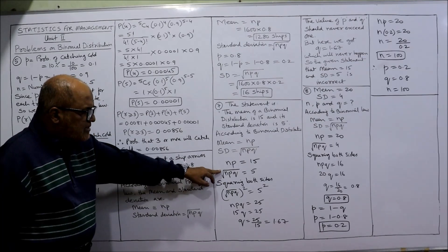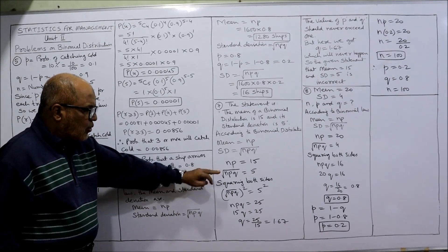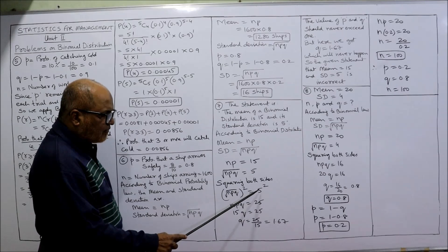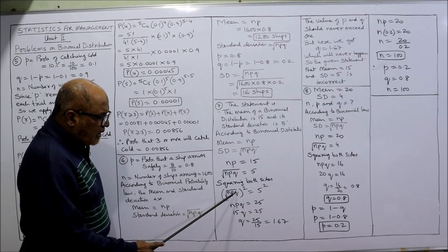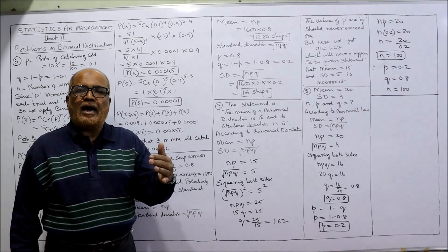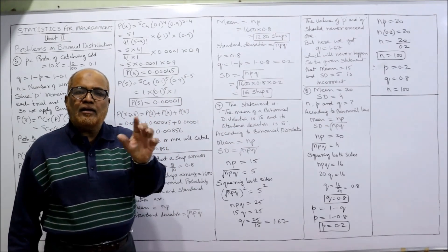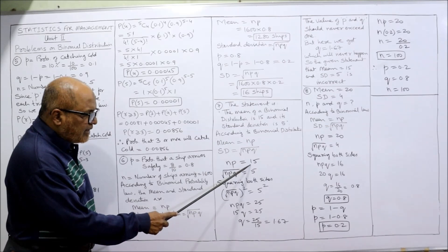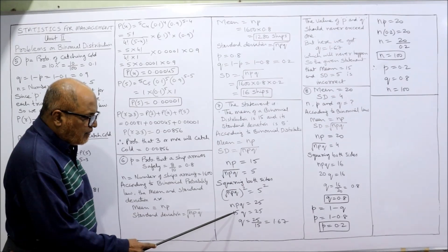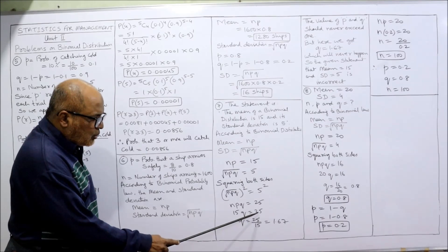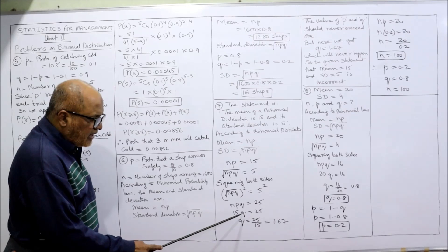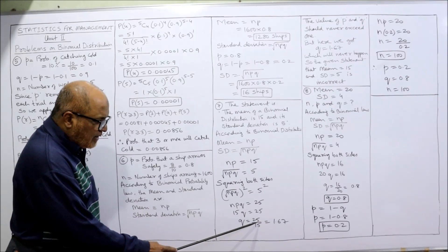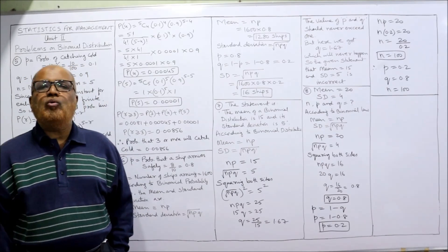To remove the square root, we square both sides: NPQ = 5² = 25. Since NP = 15, substituting gives 15Q = 25. Therefore Q = 25/15 = 1.67.